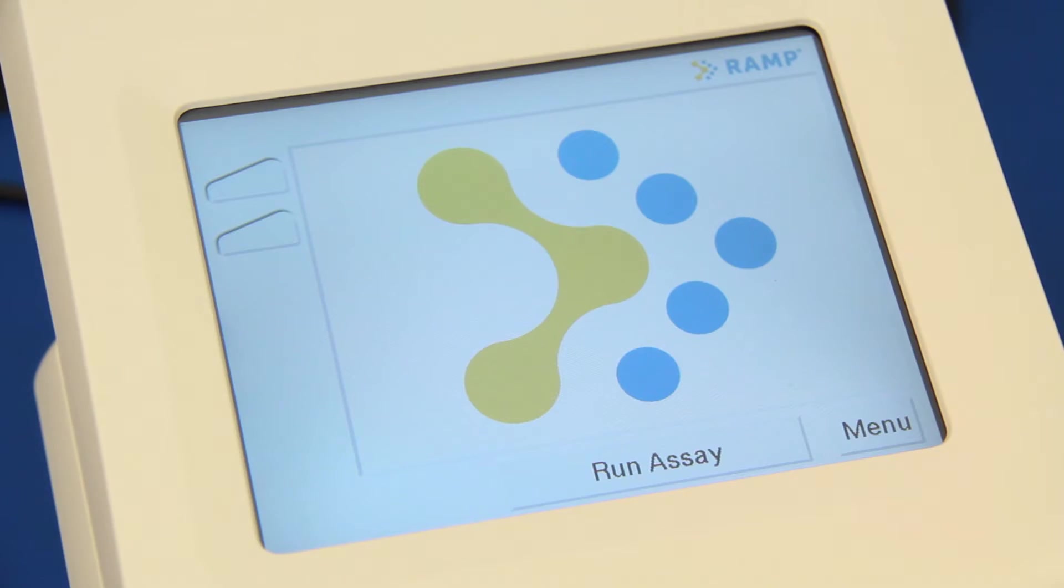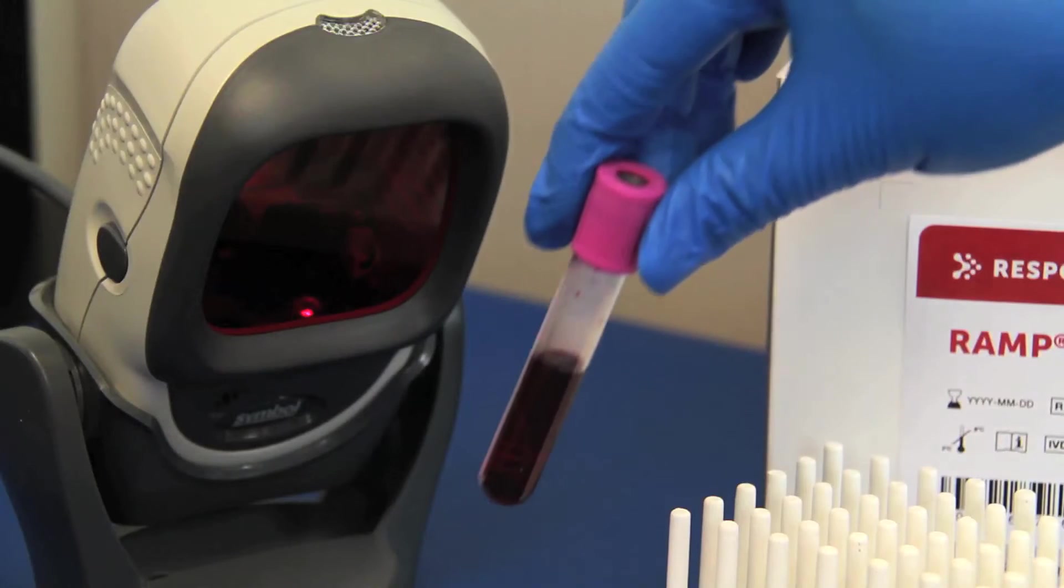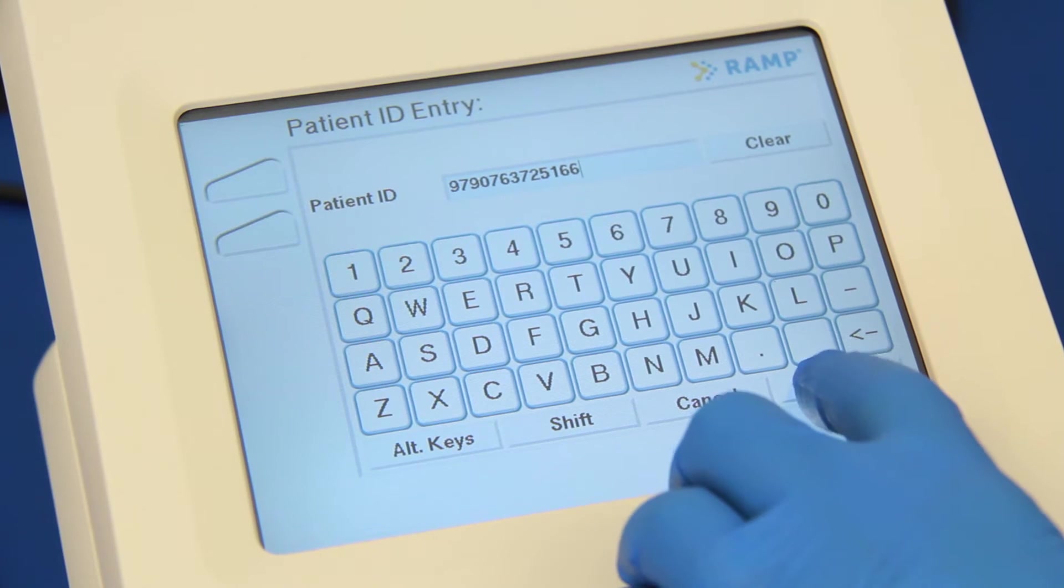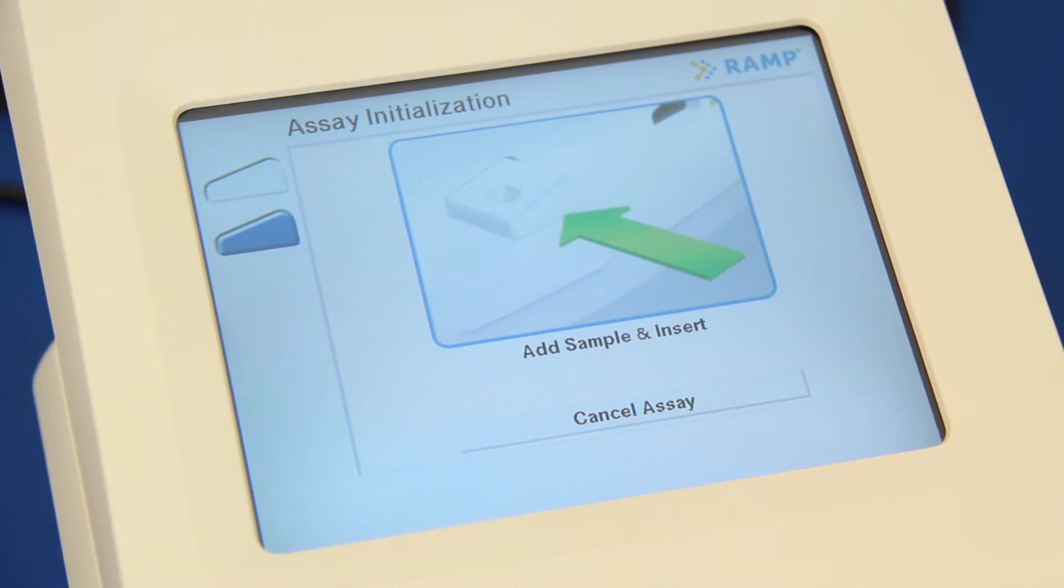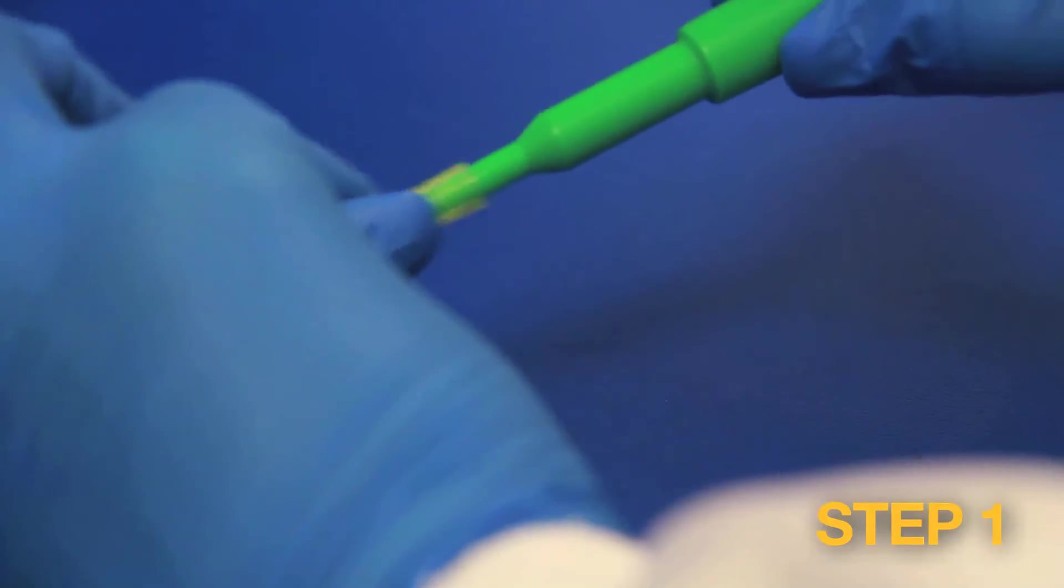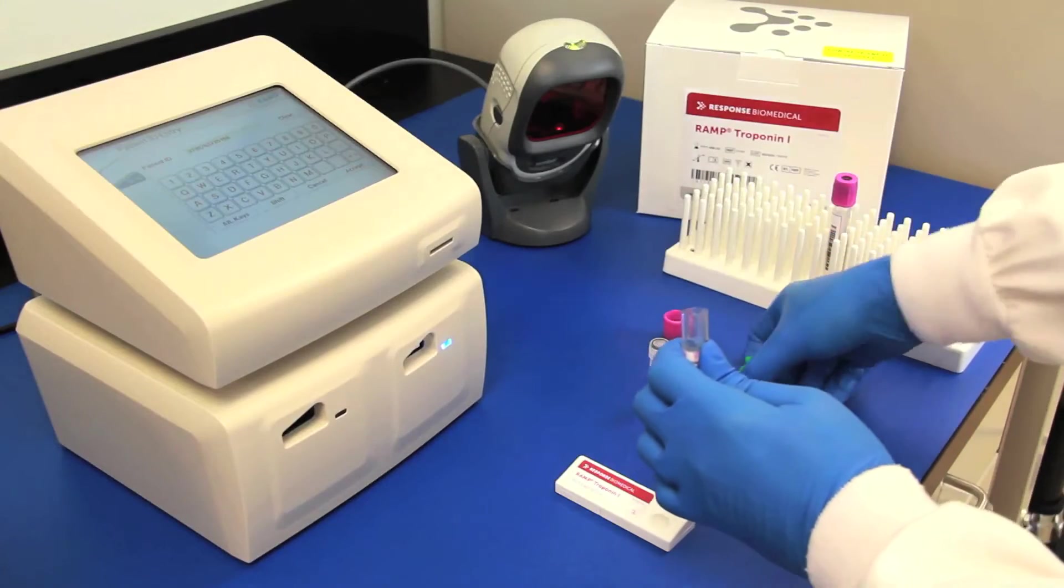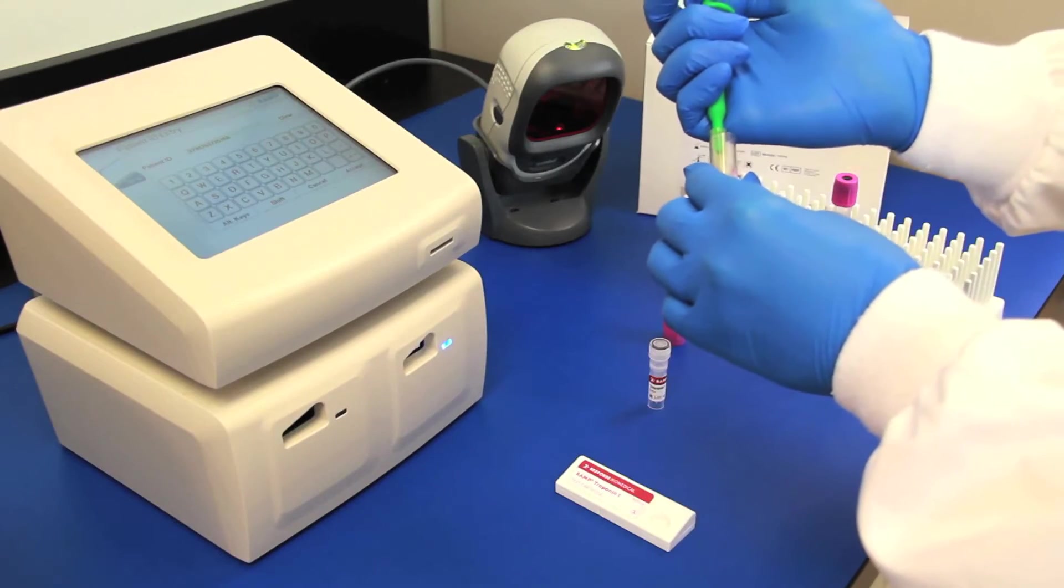To run a test, select Run Assay on the touch screen display. Enter the patient details manually or by using the barcode scanner. Attach the test tip to the pre-calibrated transfer device provided to measure exactly 75 microliters of sample. Draw the patient sample and mix with a specially formulated buffer.